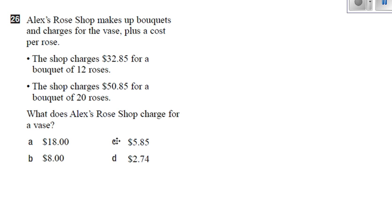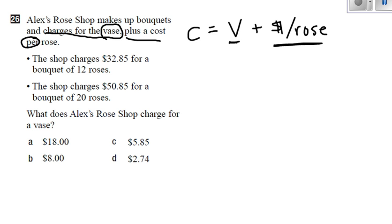What does Alex's rose shop charge for a vase? There's a charge for the vase, plus a cost per rose. The word per generally means we're talking about slope. So the charge of getting a bouquet is the vase, plus a certain amount of money per rose. When you go and buy roses, you pay for one vase and you pay for however many roses you got. This is a linear relationship because there is a slope and a flat rate.